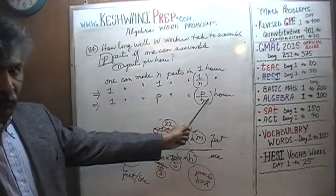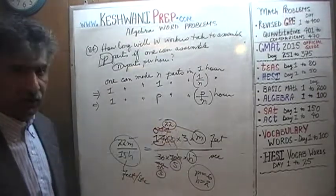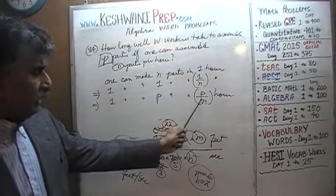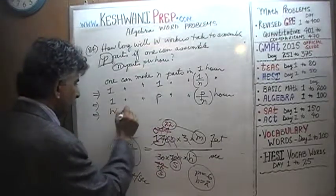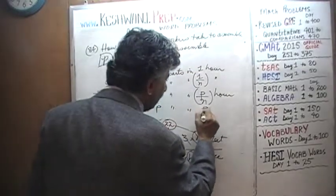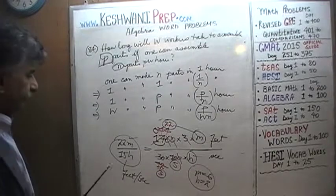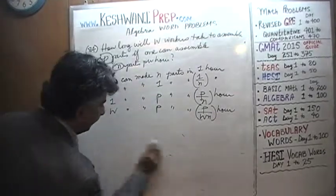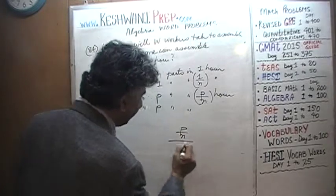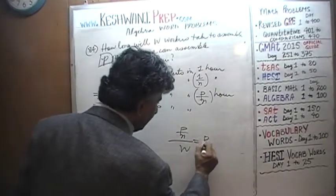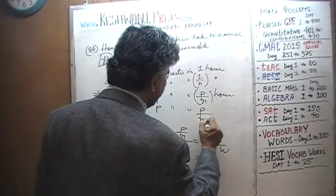But if one worker can do it in p/n hours, adding more workers reduces the time proportionally. Two workers take half the time, three workers take a third of the time, and w workers take one-wth of the time. So w workers can make p parts in p/n divided by w hours, which is the same as p over n times 1 over w, which gives us p over nw hours. That is our answer: p over nw hours.